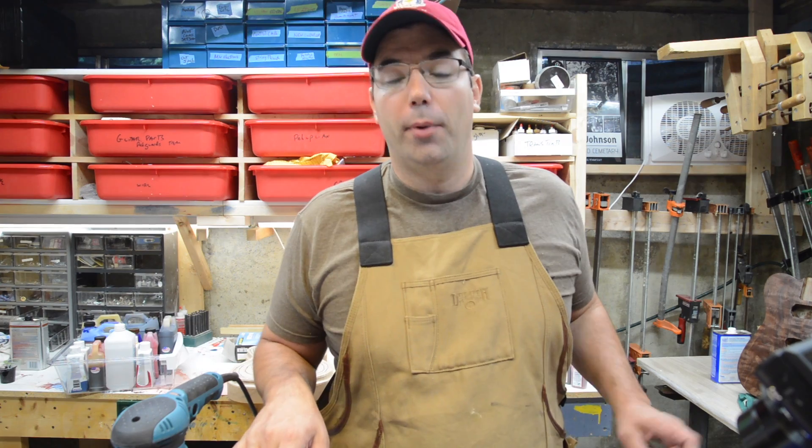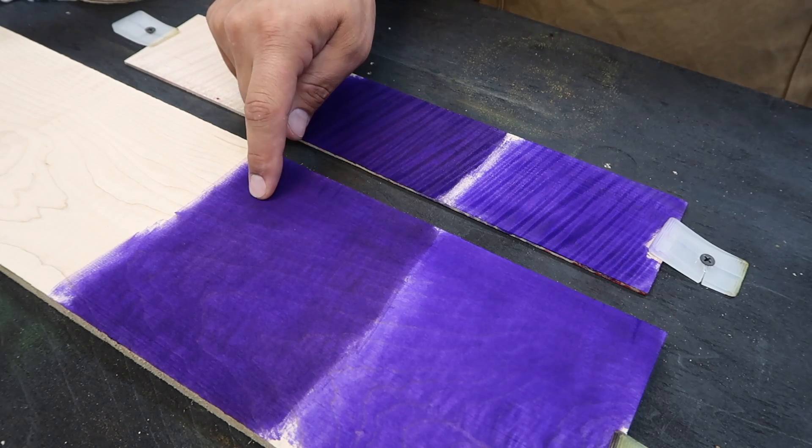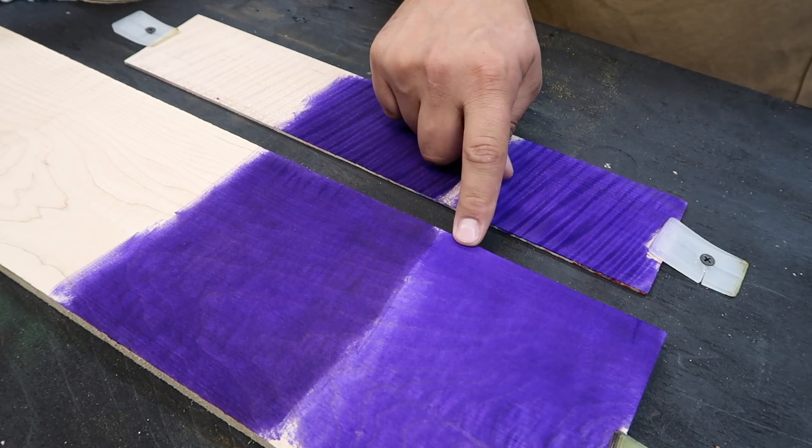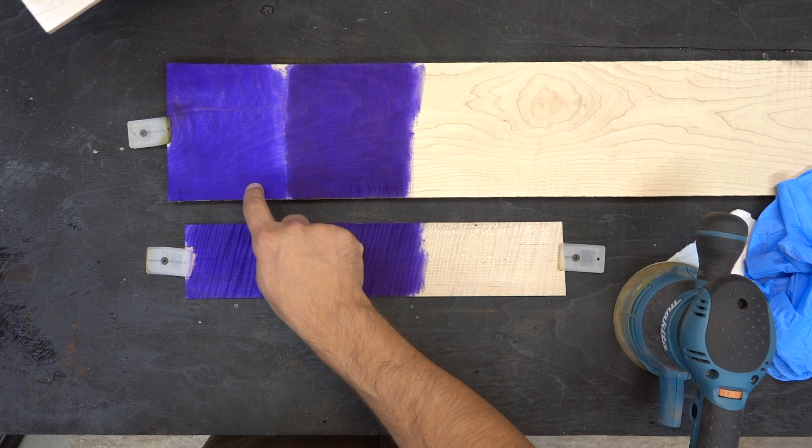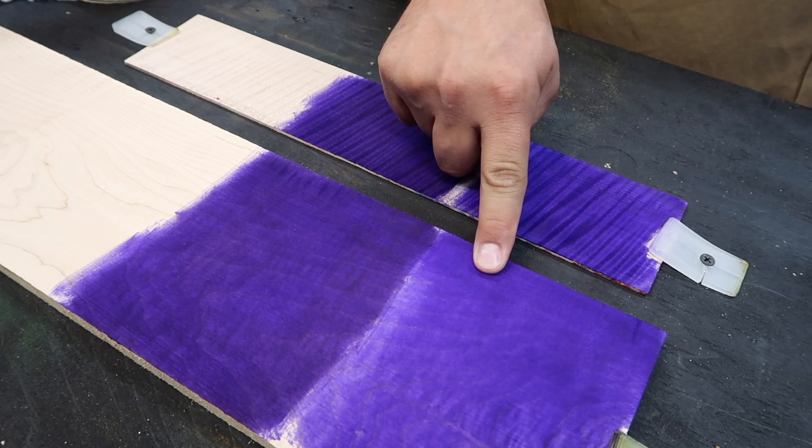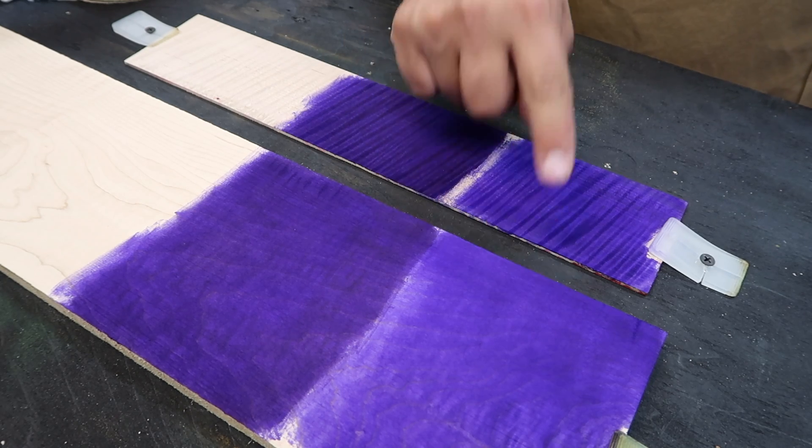So this is after a couple hours drying, we've got the 50-50 mix, and we've got the straight from the bottle, and it's interesting to see the two different colors that we've got going on here. Really dark purple, this is sort of a lighter purple, but still very full in color.